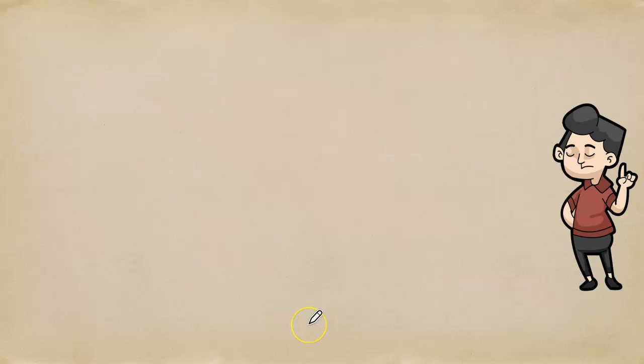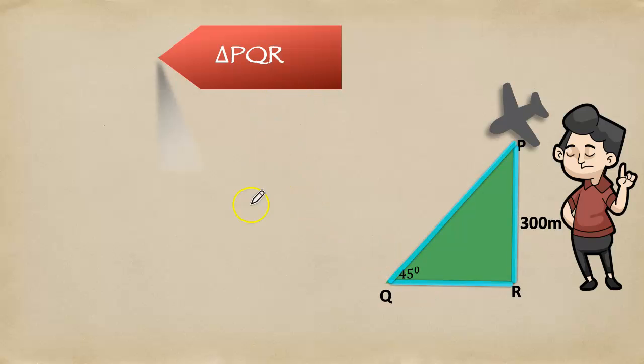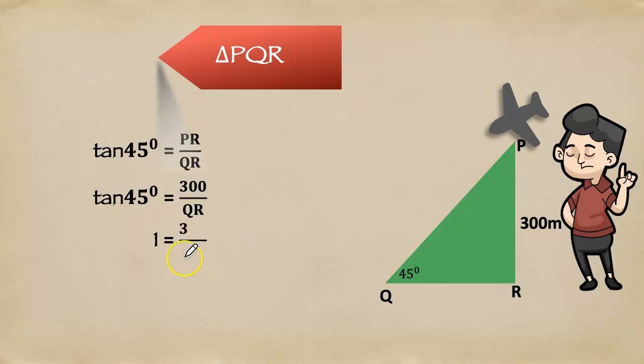Now, see the next angle of depression on other side, 45 degree. Here the triangle formed is PRQ. And PR is 300 meter. The side opposite to the 45 degree triangle. So, tan 45 equals 1 equals 300 by QR. Cross multiplying. Therefore, QR equals 300 meter.